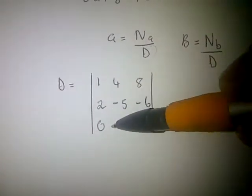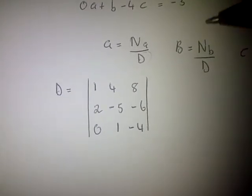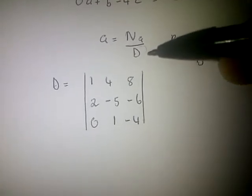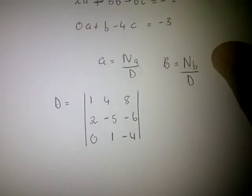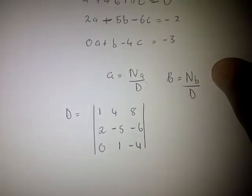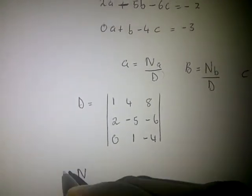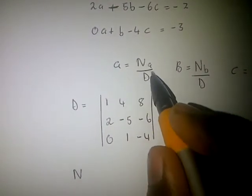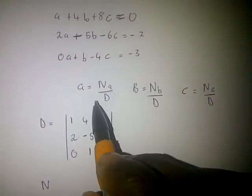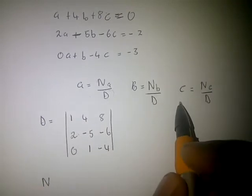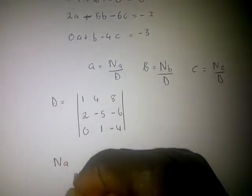So D is just the coefficient matrix of this equation. When someone says 'determine all coefficients of this equation,' that means you only solve for D — not Na, not Nb, not Nc. Then to find Na, since a equals Na over D, we use D's structure but modify it to find Na.